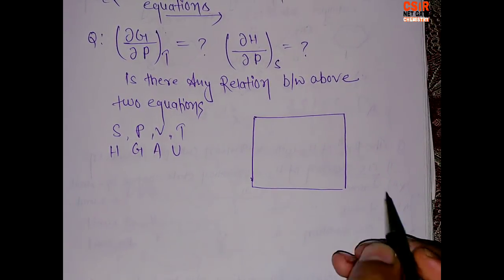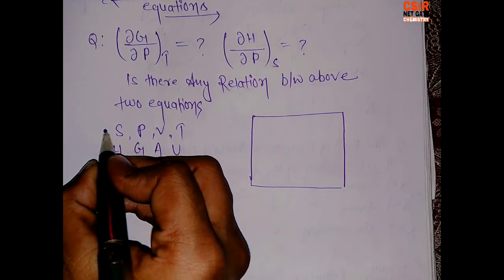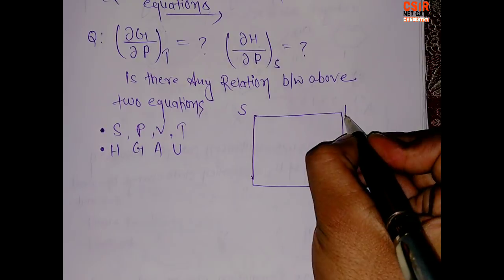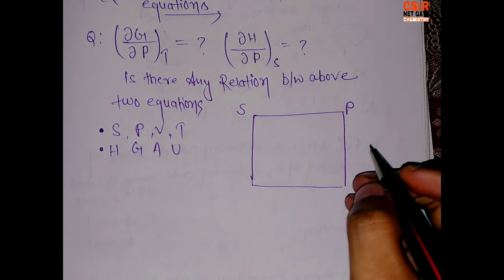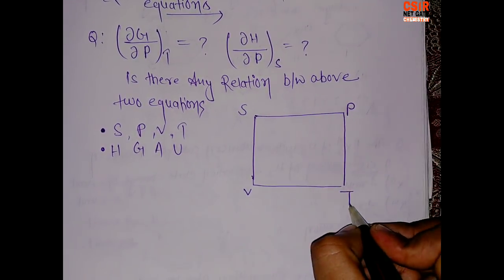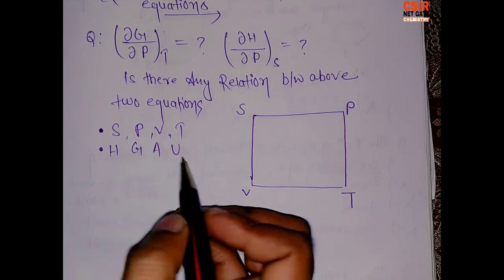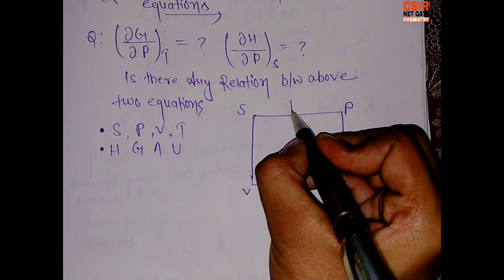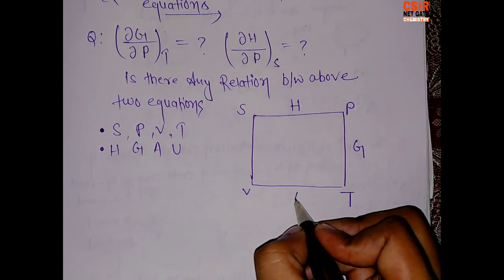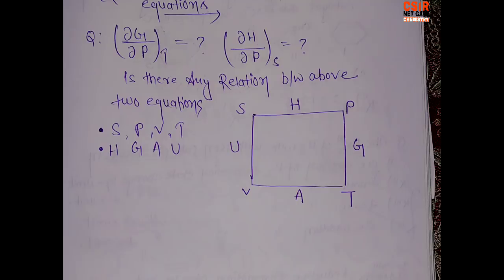First, place these four parameters — S, P, V, and T — at the corners of the square. Then place these four energies: H (enthalpy), G (Gibbs free energy), A (Helmholtz energy), and U (internal energy) on the sides. Then place arrows — one going this way and the second going this way.